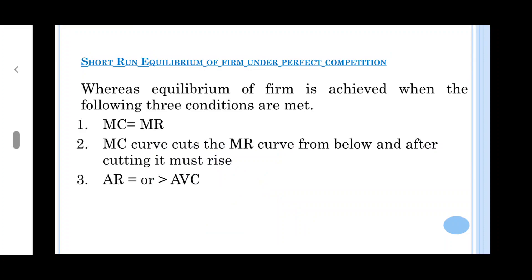Now, come to the equilibrium of the firm. Equilibrium of the firm is achieved when three conditions are fulfilled. One, marginal cost is equal to marginal revenue. Two, marginal cost curve cuts the MR curve from below and after cutting it must rise.